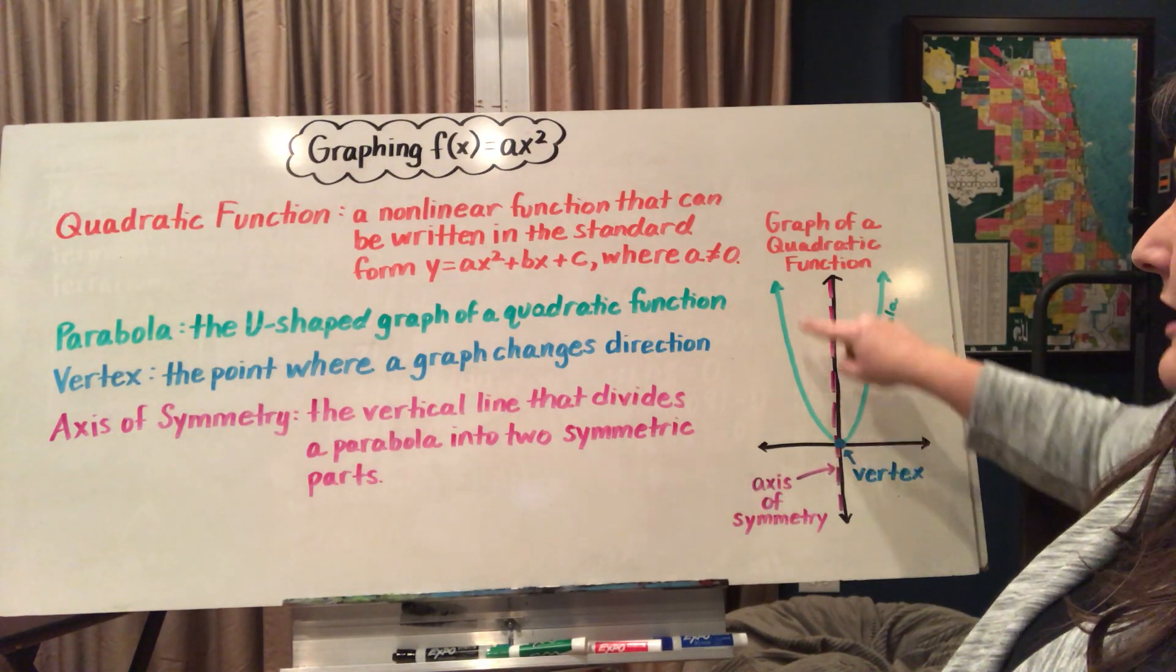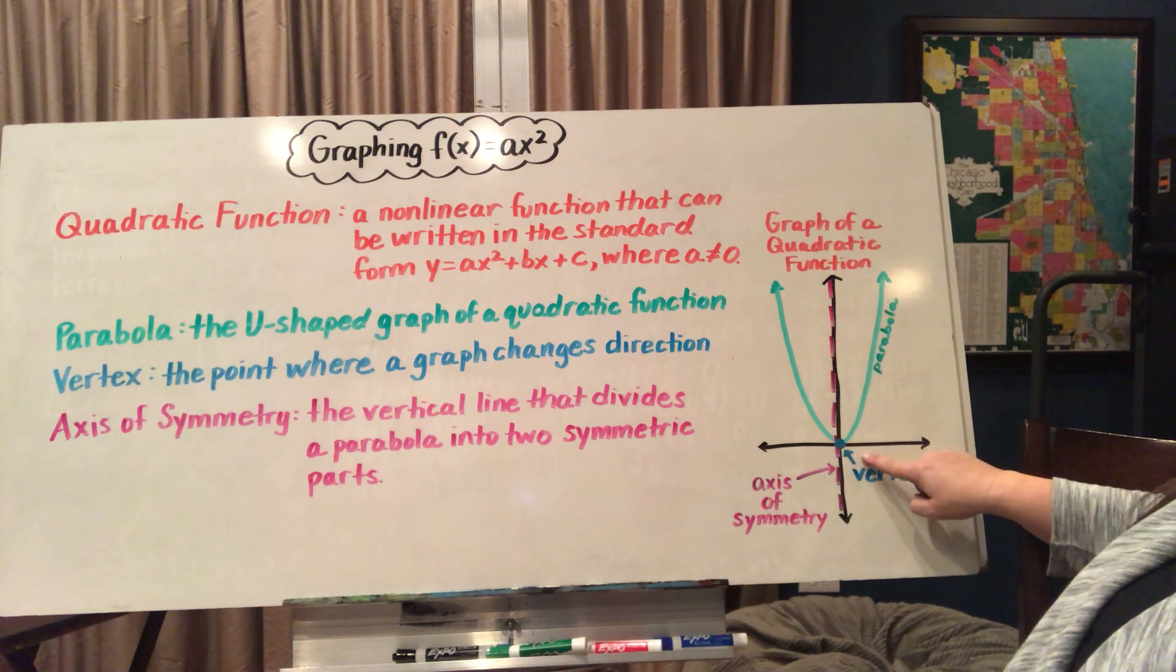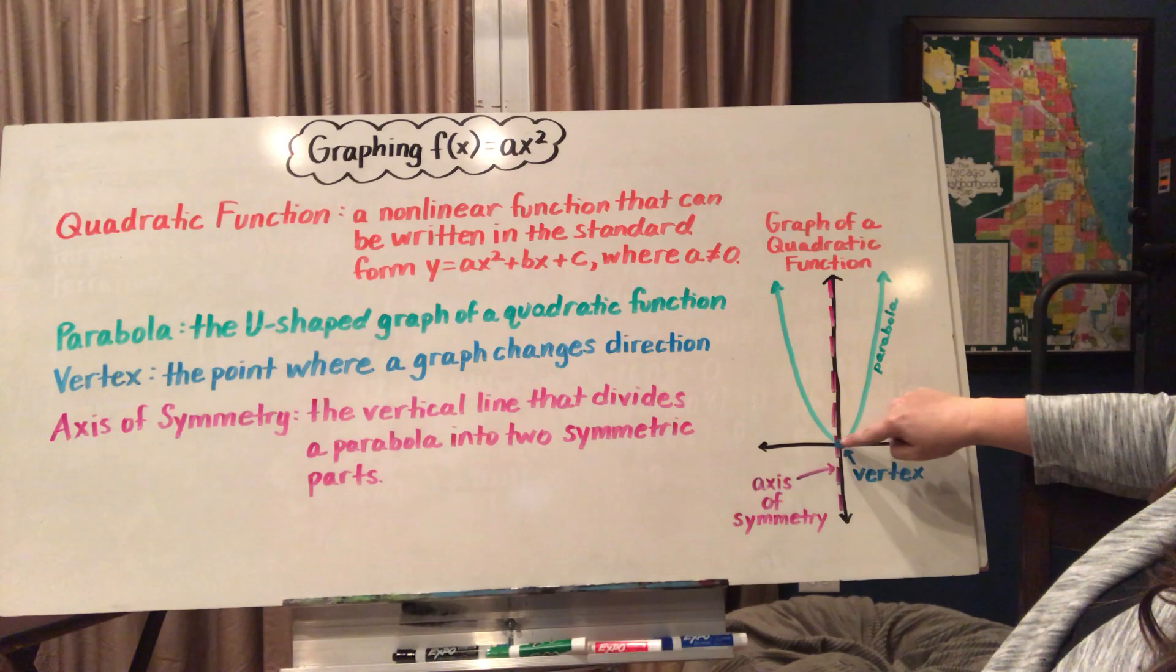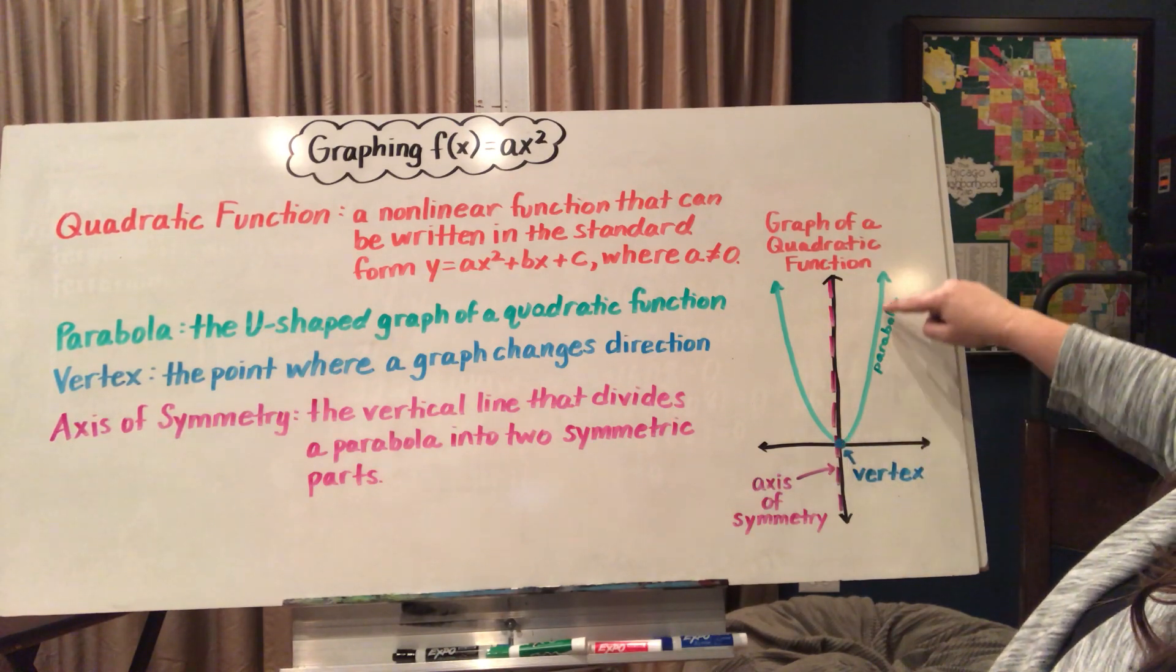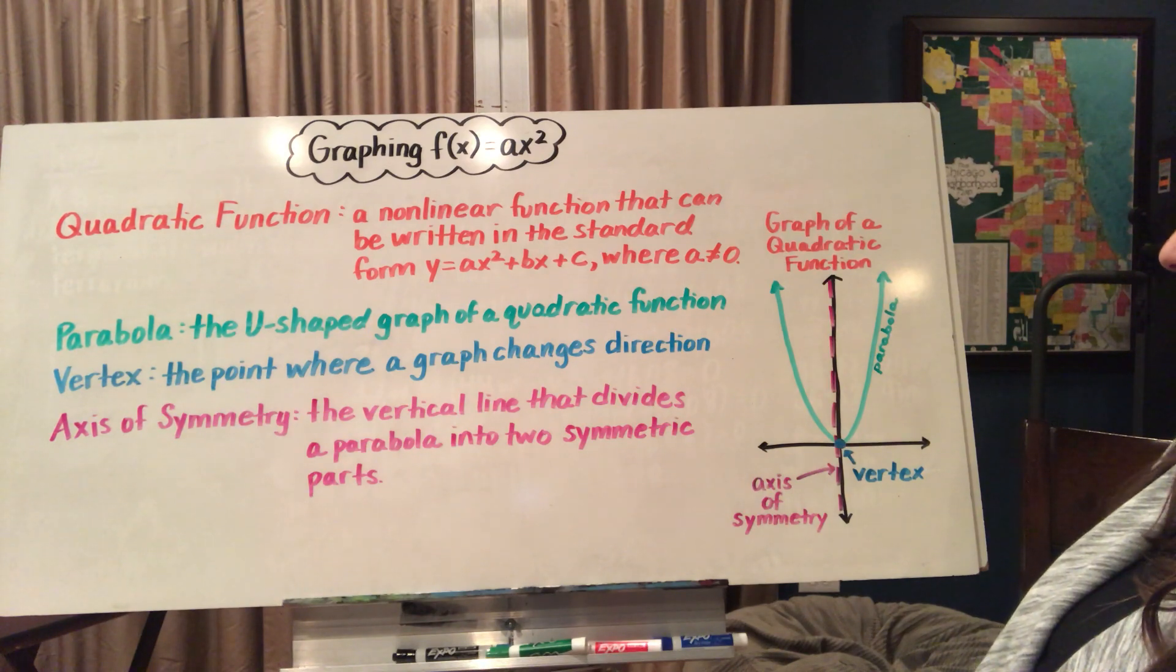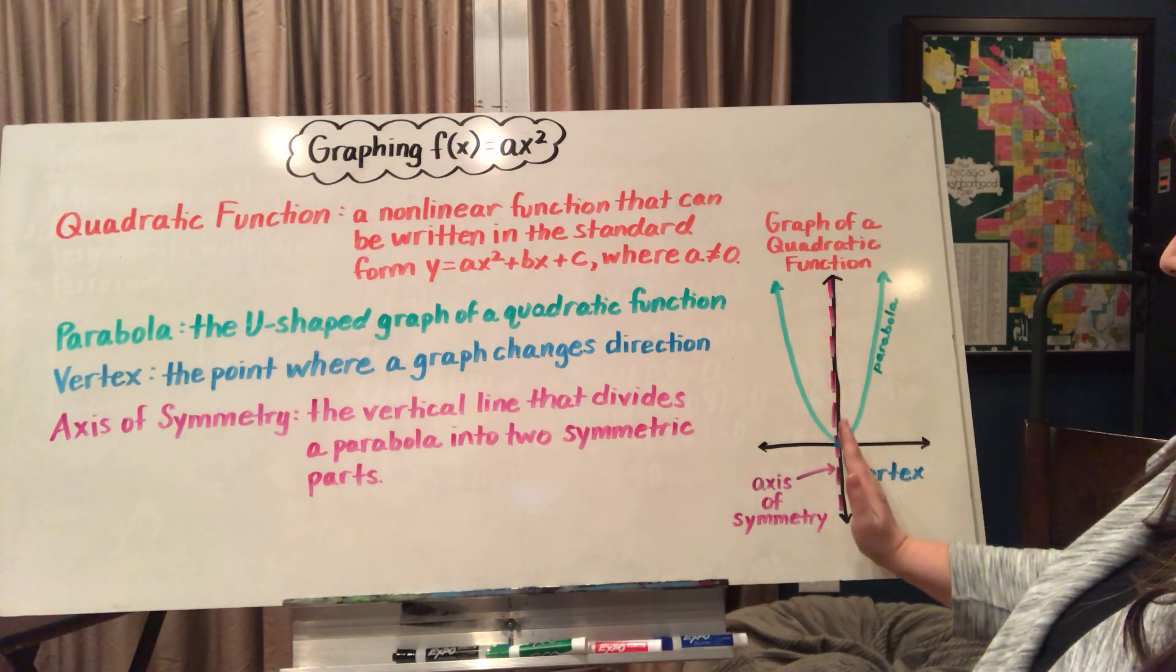The point where the graph changes directions is called the vertex. So here my graph is decreasing. When it hits the vertex, it begins increasing. The axis of symmetry is a vertical line that divides the parabola into two symmetrical parts.